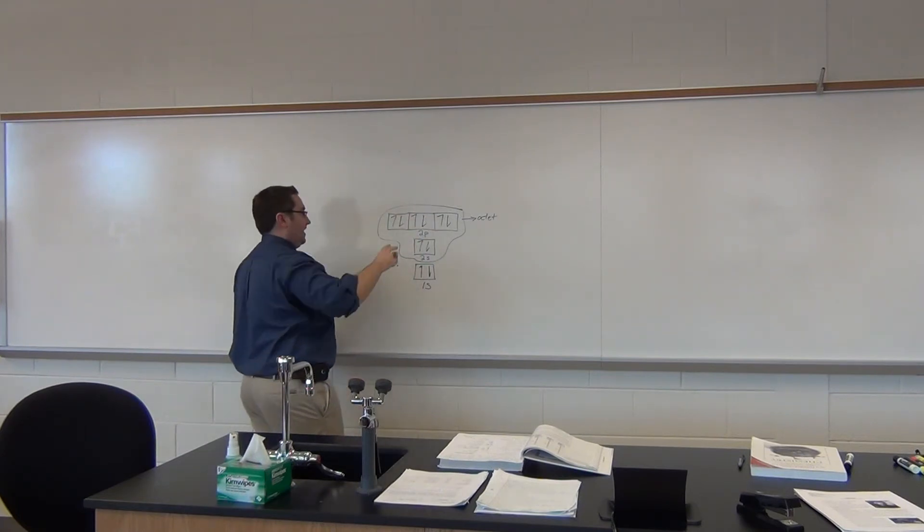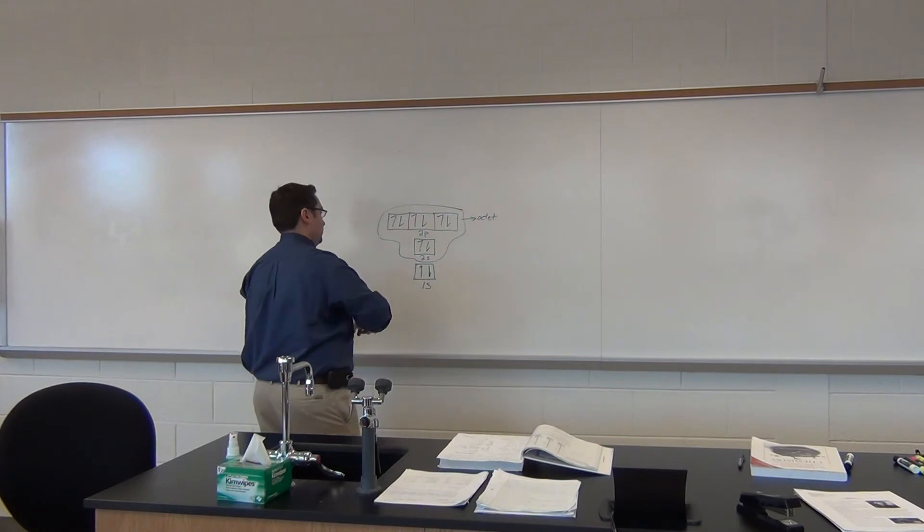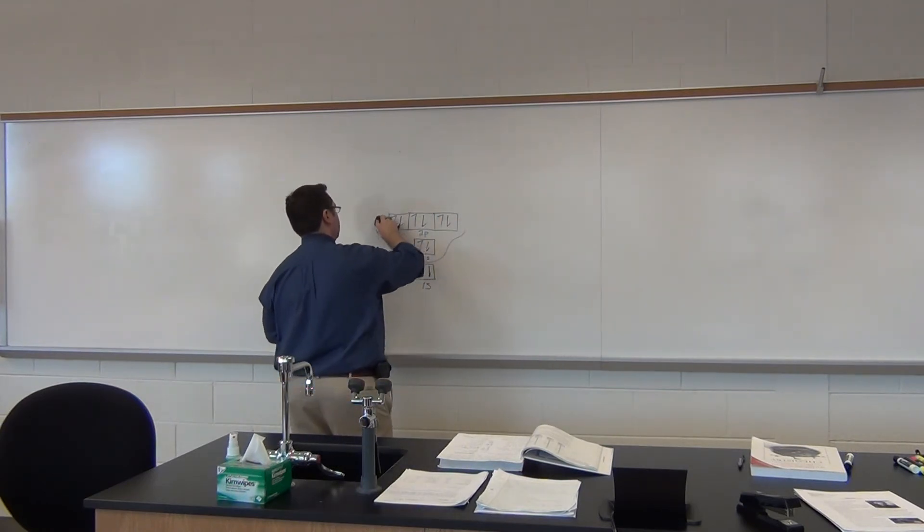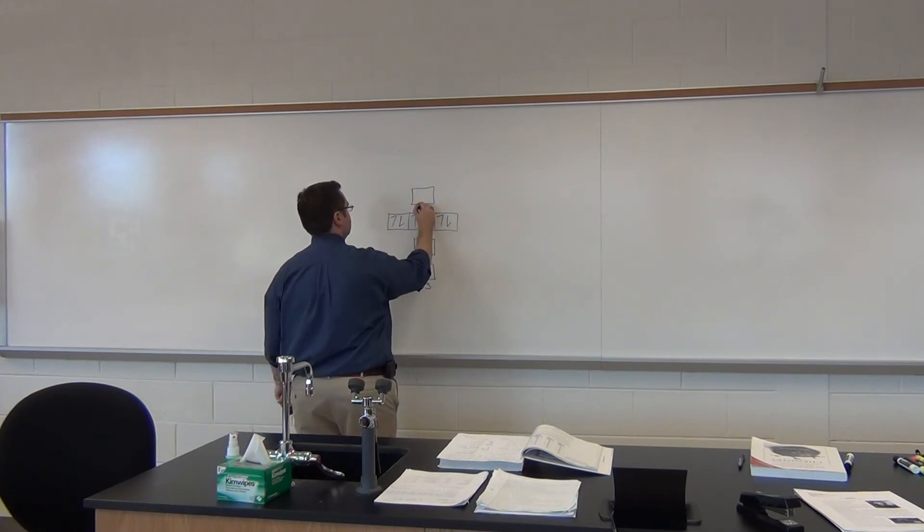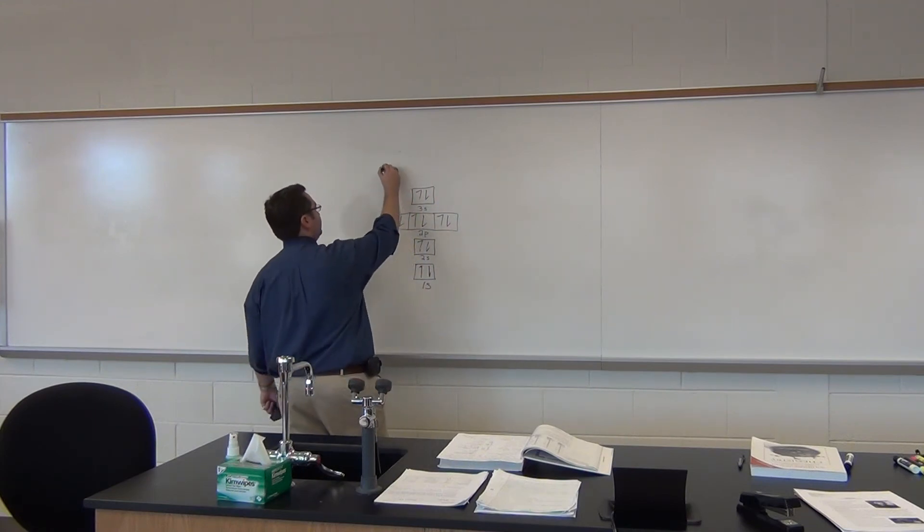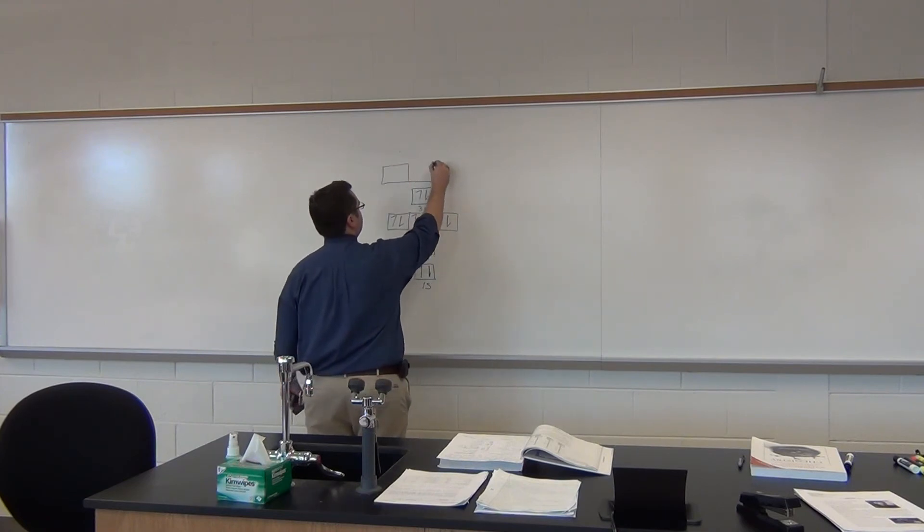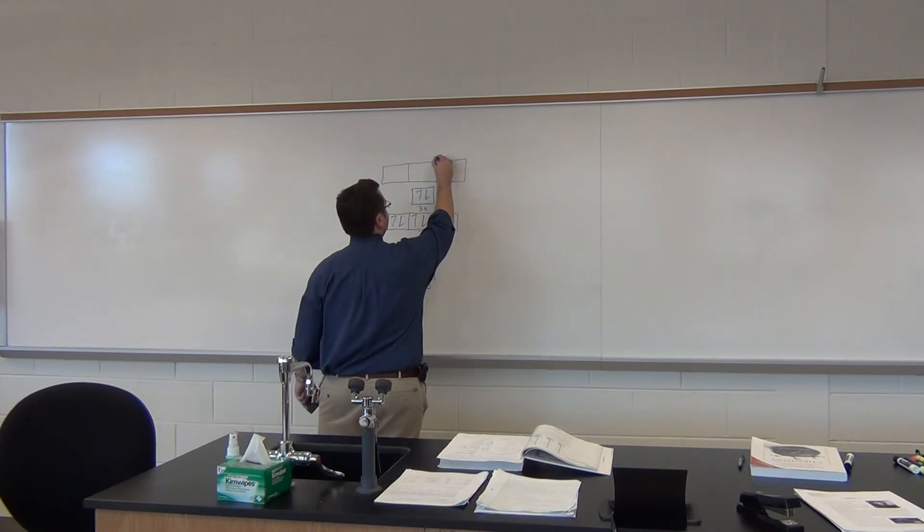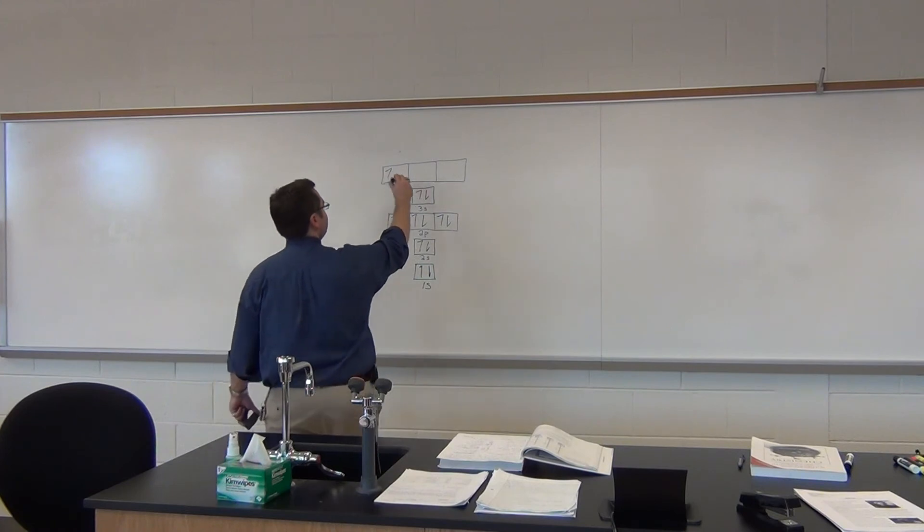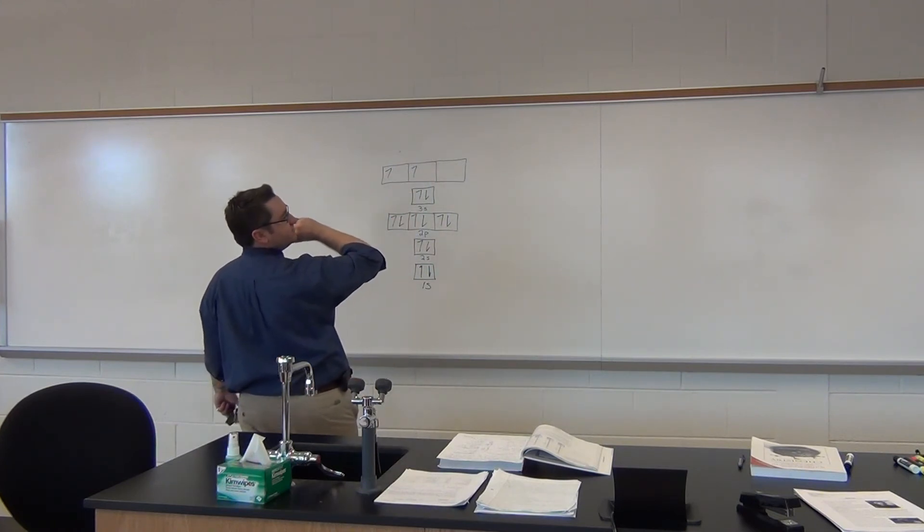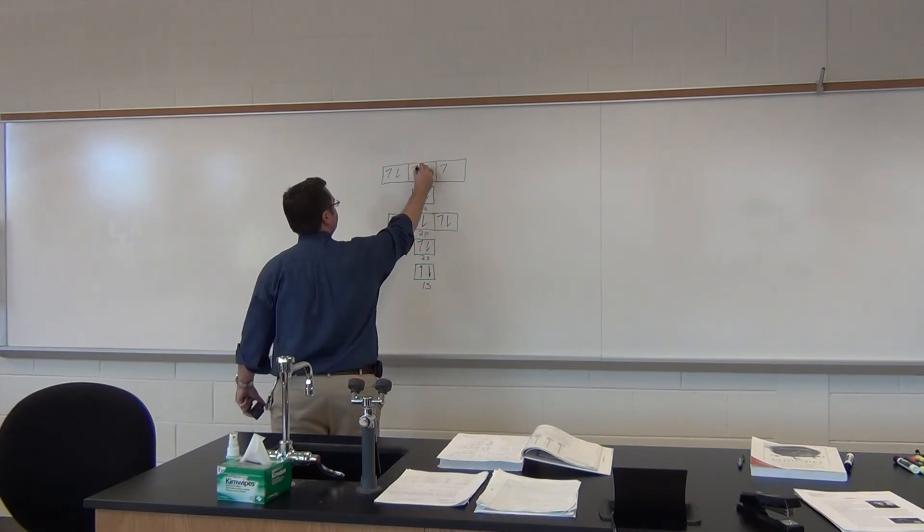Once you go to the next one which is sodium, you'd move into your 3s. So you have sodium, magnesium, and then we go aluminum, silicon, phosphorus, sulfur, chlorine, argon.